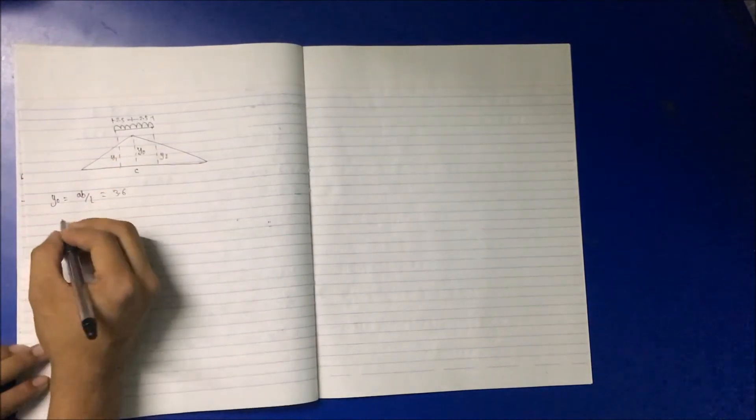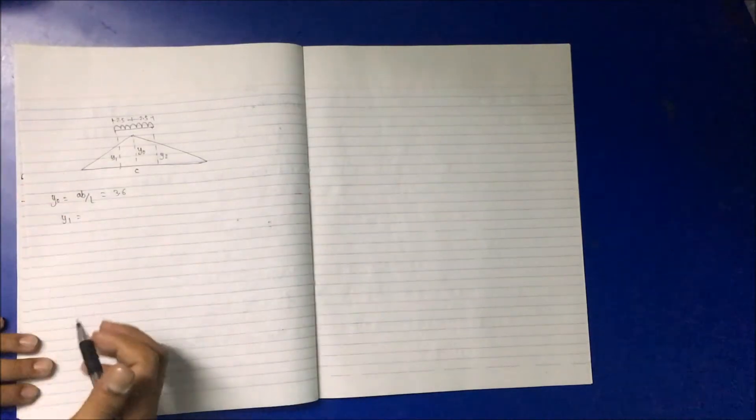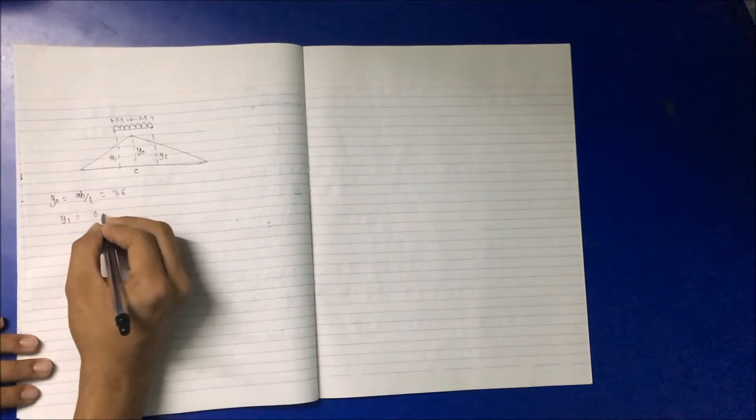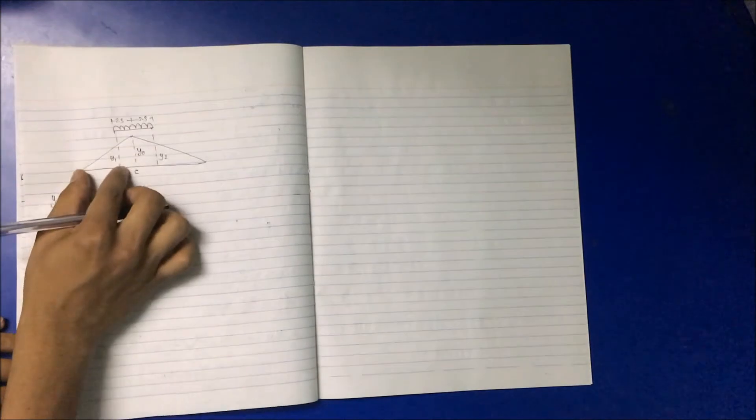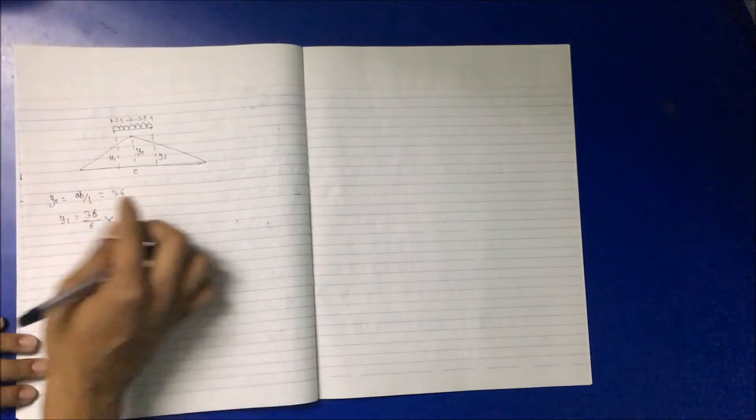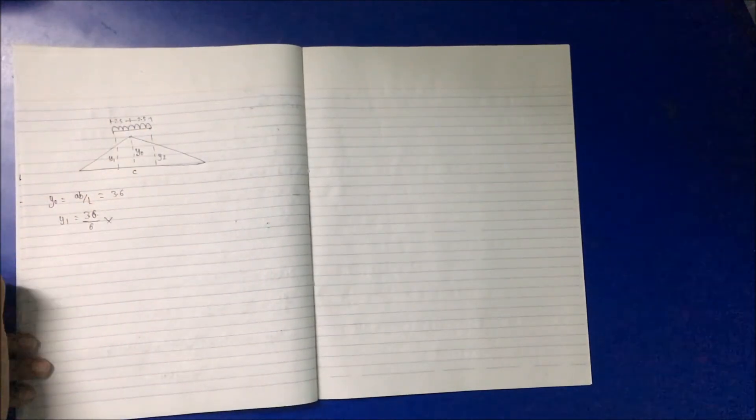And y1, using the similar triangular property: 3.6 divided by span that is 6, multiply by this span... 6 minus 2.5, multiply by 3.6 divided by 6, I get 2.1.